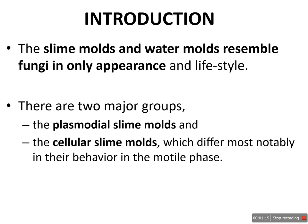However, the assimilative stage in the slime mold is morphologically similar to that of amoeba. This assimilative stage has been designated as myxamoeba. The myxamoeba, as is the case of the amoeba, is a uninucleated haploid cell which is not enclosed in a rigid cell wall, and ingests its food by means of phagocytosis.